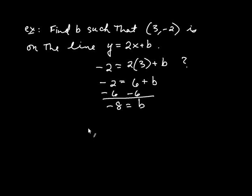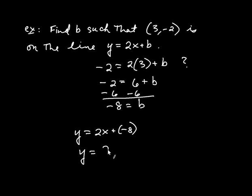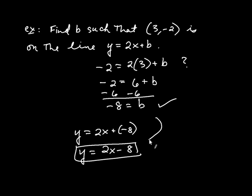So we found b equals negative 8, meaning the equation is y equals 2x plus negative 8, which we write as y equals 2x minus 8. Now we're ready to put all this together to find the equation of a line in slope-intercept form given information.